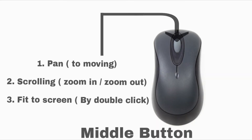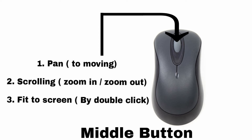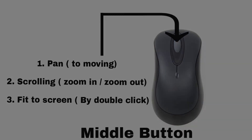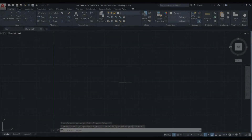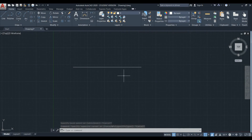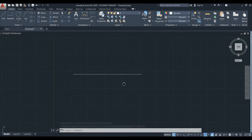The middle button is used for three functions: 1. Panning — for moving the view; 2. Scrolling; 3. Fit to screen view. For panning, press and hold the middle button for moving.